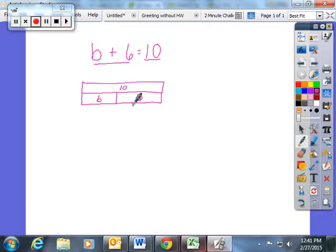B plus 6 is equal to 10. So then I encouraged the students to draw some blank tapes. I asked them to start with 10 and 6 and leave our unknown variable B blank, and I asked them to look at it and think about how they would mathematically solve for that missing piece.